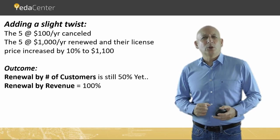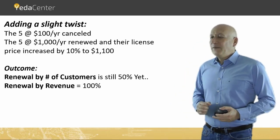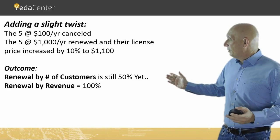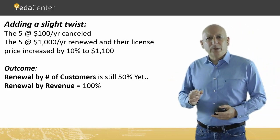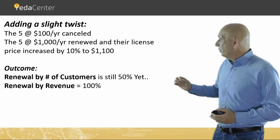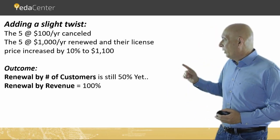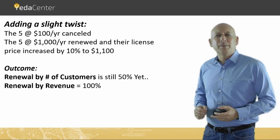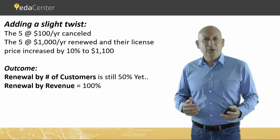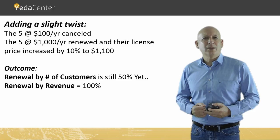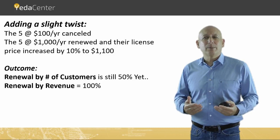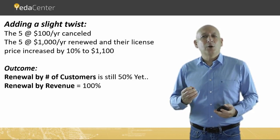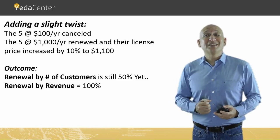Now, let's add a small twist. The 5 customers at $100 per year still canceled. But those that renewed — the 5 at $1,000 — this time we increased their price by 10%. So the new annual license is $1,100. The outcome is that renewal by number of customers is still 50%, yet by revenue, the renewal is 100%.